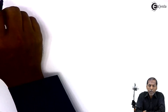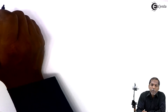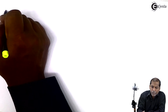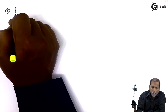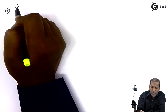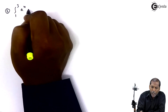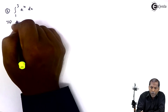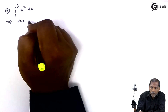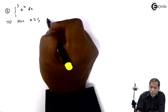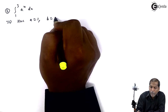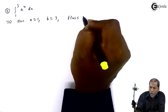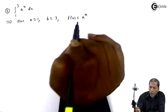Now, let us see question number 2 related to the same type — that is, integral as a limit of sum. The integral is from 1 to 3 of aˣ dx. Here the lower limit a equals 1, upper limit b equals 3, and f(x) is equal to aˣ.